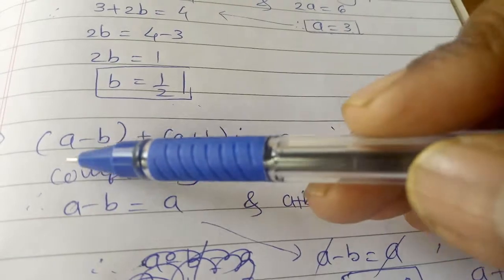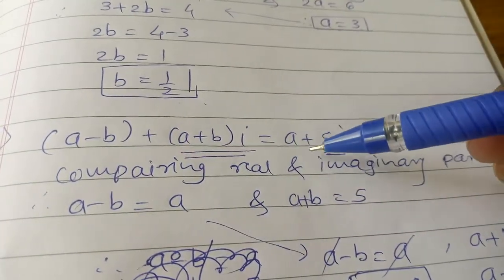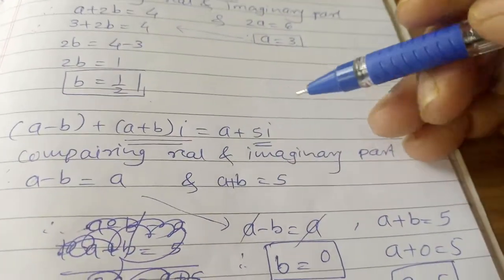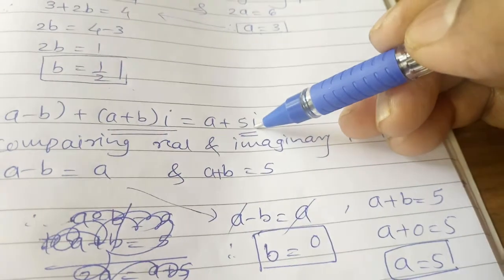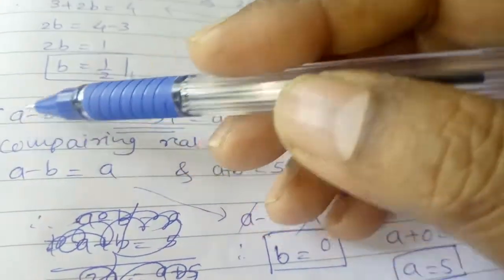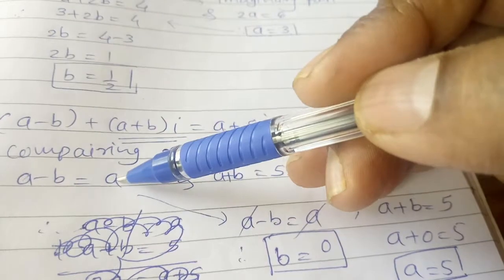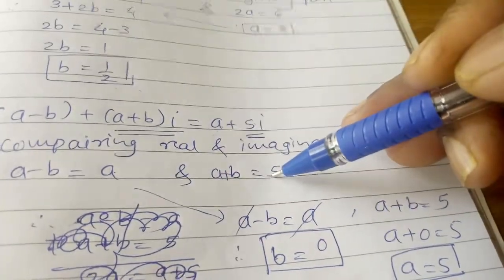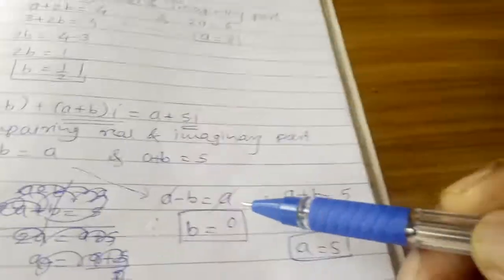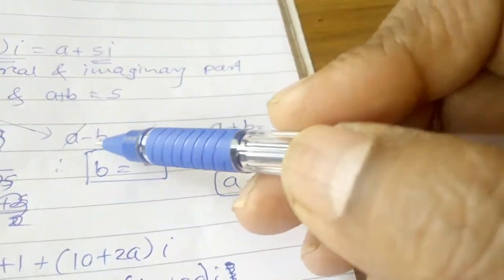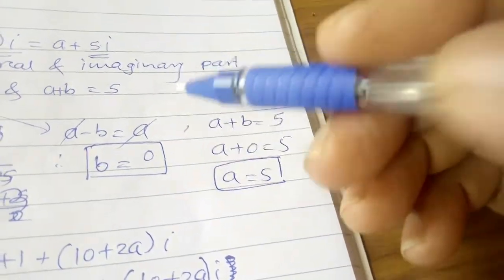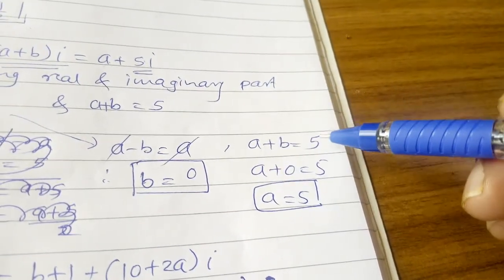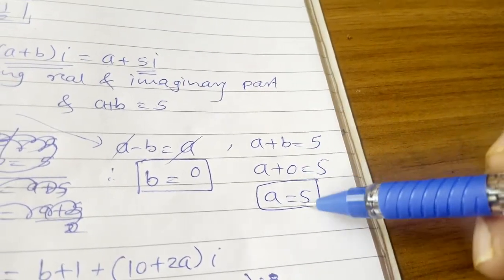Next example: a minus b plus (a plus b)i is equal to a plus 5i. Compare real and imaginary parts. Imaginary part: a + b = 5. Real part: a − b = a, so a cancels and minus b = 0, meaning b = 0. Substituting b = 0 into a + b = 5, we get a = 5.